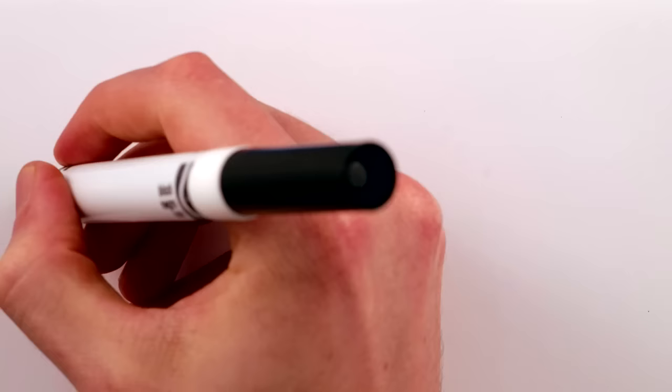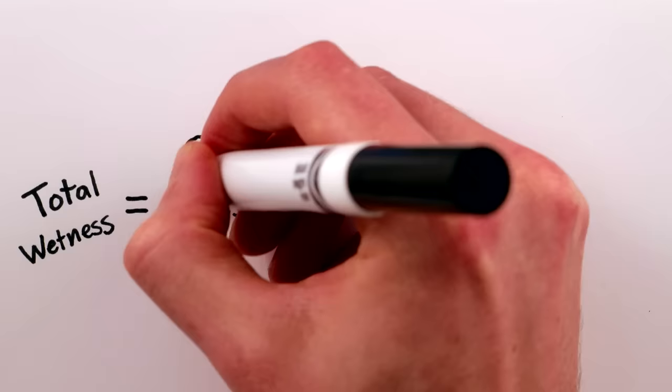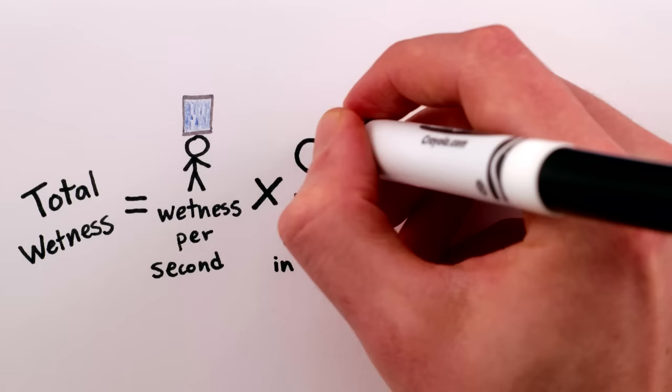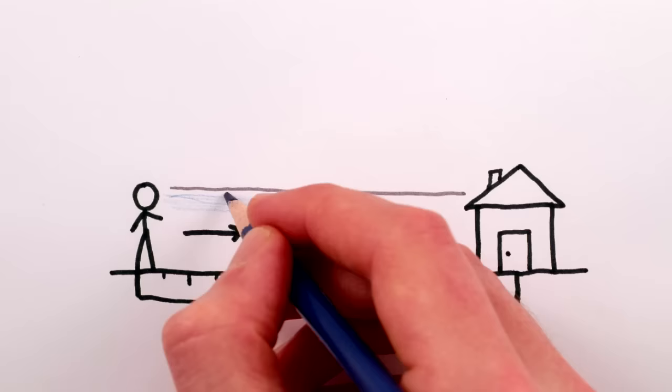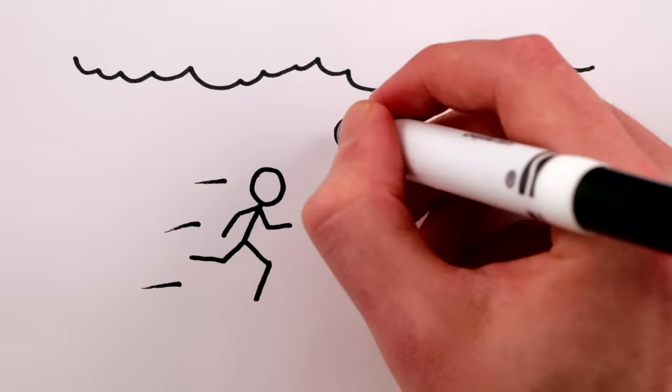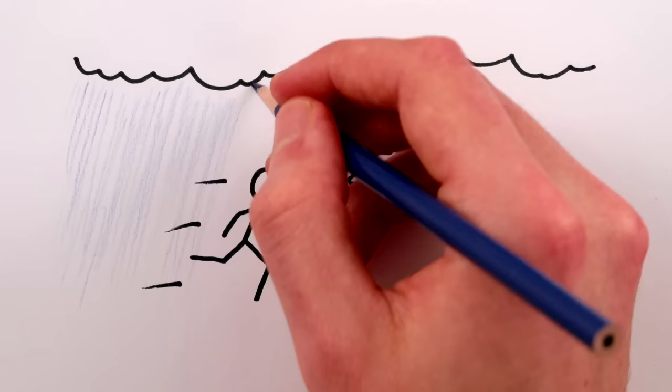So, your total wetness is equal to the wetness per second for rain from the top times the amount of time you spend in the rain, plus the wetness per meter for rain from the side times the number of meters you travel. So to stay driest, getting from one point to another, you should try to minimize the amount of water falling onto you from above. And quite simply, that means getting out of the rain as fast as possible.